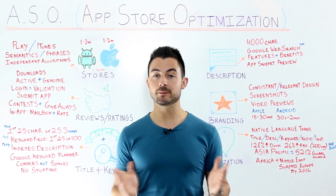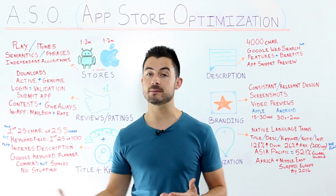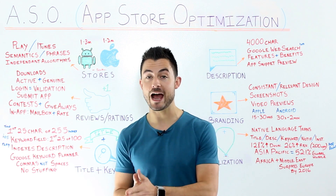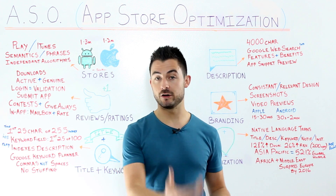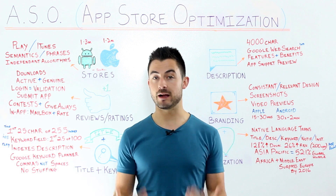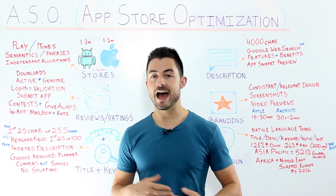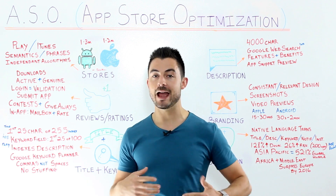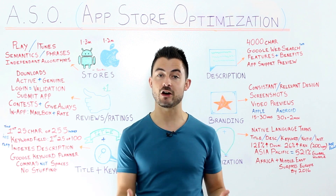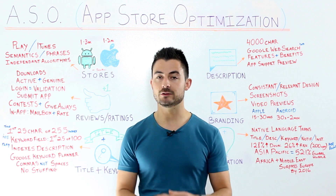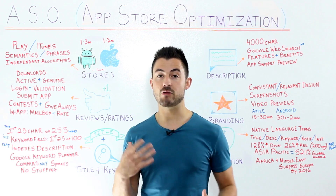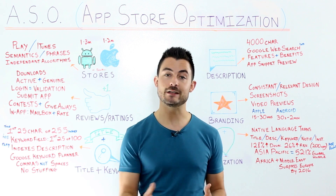App Store Optimization is basically what SEO is for websites — ASO is for increasing the success and rankings of your app on the Apple App Store and on Google Play. Today we've put together strategies and top techniques that you can use to rank better, attract more customers, and increase your downloads.